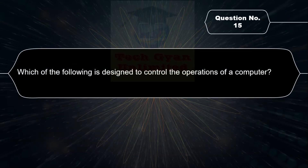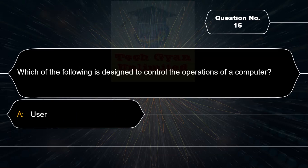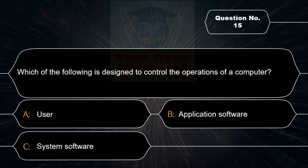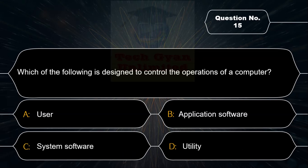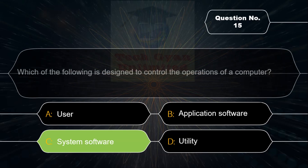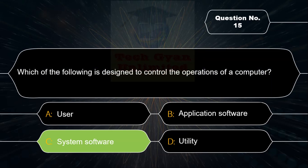Which type of software manages hardware and provides core system functions? The correct answer is Option C — System Software.